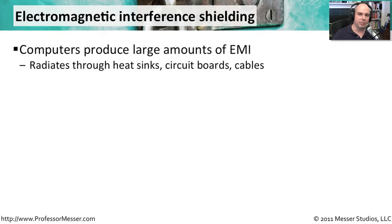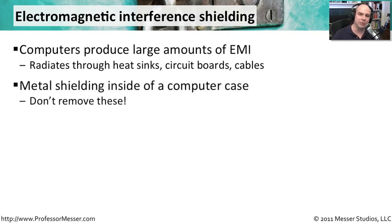One of the challenges when you get a lot of computers together is they put out a lot of electromagnetic interference. If you've ever had a radio or telephone near a computer, you may notice interference coming from it. It comes from the heat sinks, circuit boards, cables, and interfaces directly on the computer. If you open up a computer, you'll find a lot of metal shielding — it may be on the case itself or wrapped around different components — and that's to prevent electromagnetic interference. You don't want to remove that shielding, because it's preventing those signals from getting into other things in your environment.